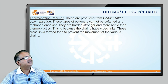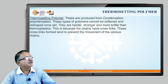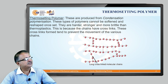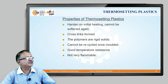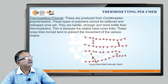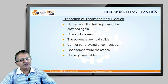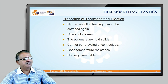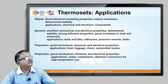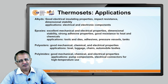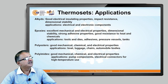The second type of material is thermosetting polymer. They are produced by condensation polymerization and cannot be softened or reshaped once they are set. The long cross-linked molecular chain is shown in the diagram. Thermosetting plastics harden on initial heating itself and cannot be reprocessed; they form cross-links which make them a rigid solid that cannot be recycled once molded. However, they have good temperature and dimensional stability. The material-wise property conformance, design requirement, and application range are given for thermosetting materials such as alkydes, epoxies, polyesters, and polyimides.